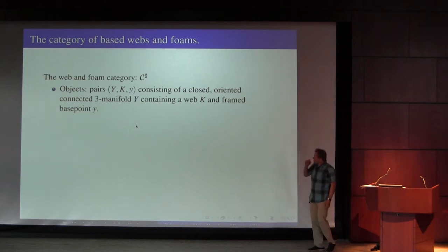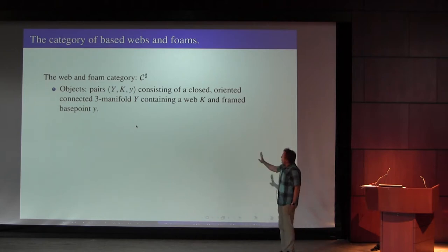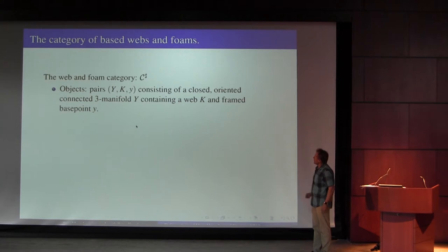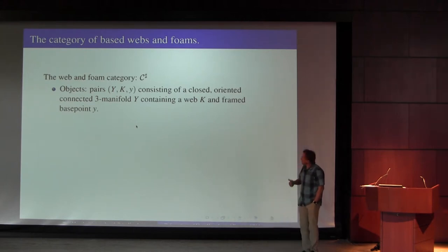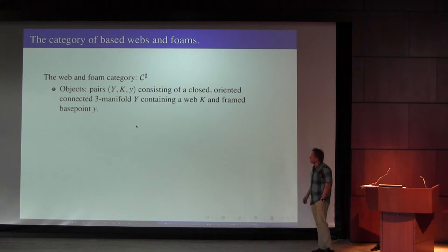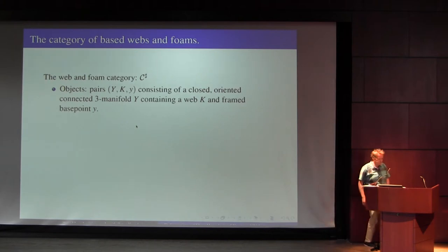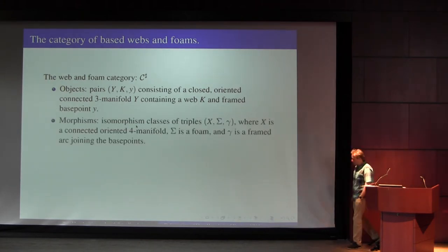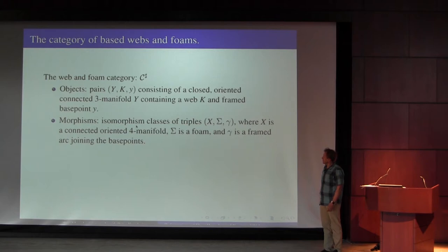What instanton homology does for you is it defines — I have a hard time saying it — a functor. On a certain category: the category whose objects are triples of a three-manifold which is closed, oriented, and connected, containing a web — a trivalent graph embedded in the three-manifold — and we need a framed base point. A morphism is a triple consisting of a four-manifold with boundary, where the boundary has an incoming and an outgoing three-manifold.